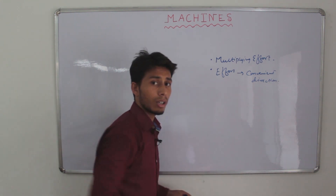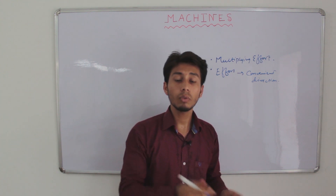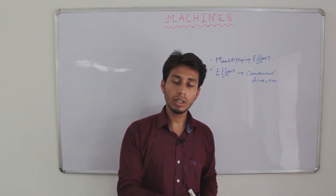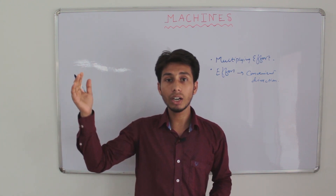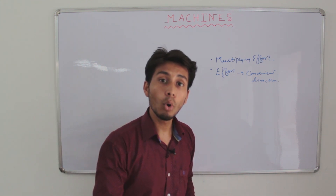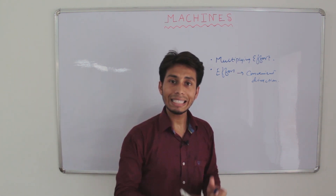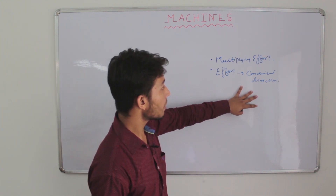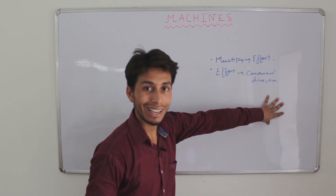For example, consider fetching water from a well with the help of a pulley. If you fetch water directly from the well, you apply effort in an upward direction — against gravity — so you have to apply more effort. But with a pulley, you apply effort in a downward direction, along gravity. So in this case, the machine helps us apply effort in a convenient direction.